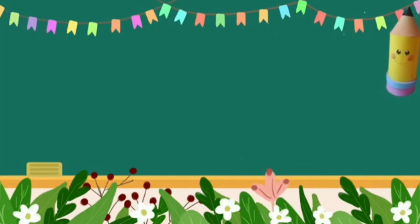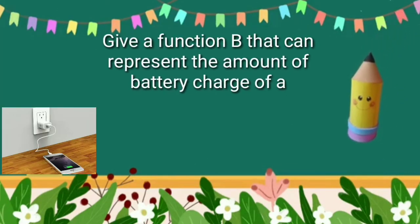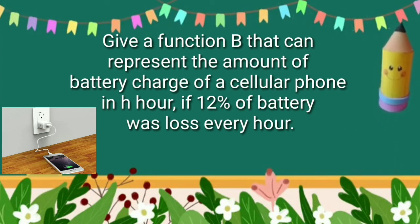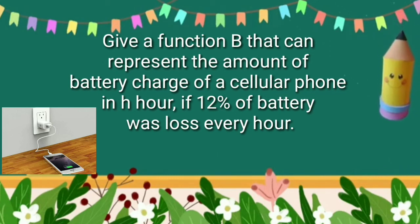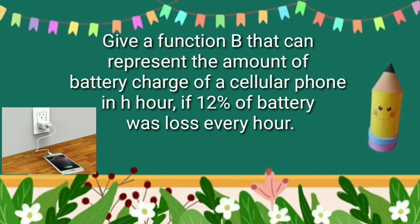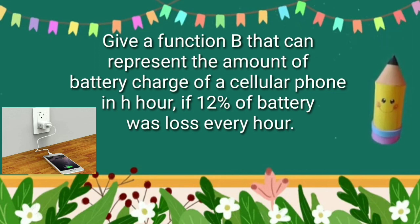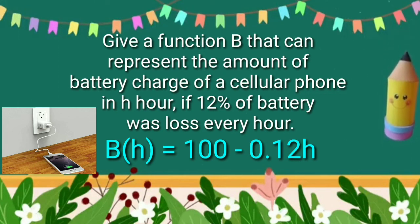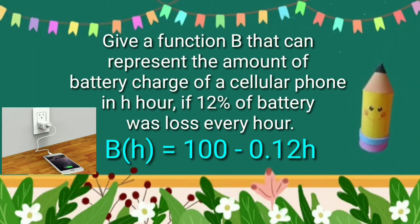Letter c. Give a function b that can represent the amount of battery charge of a cellular phone in each hour, if 12% of battery was lost every hour. Solution: since every hour loses 12% of battery, then the amount of battery function is b of h is equal to 100 minus 0.12h, where 12% is equivalent to a decimal of 0.12.